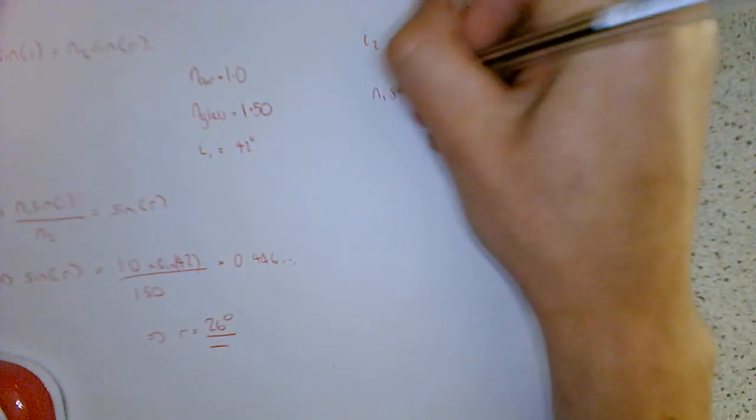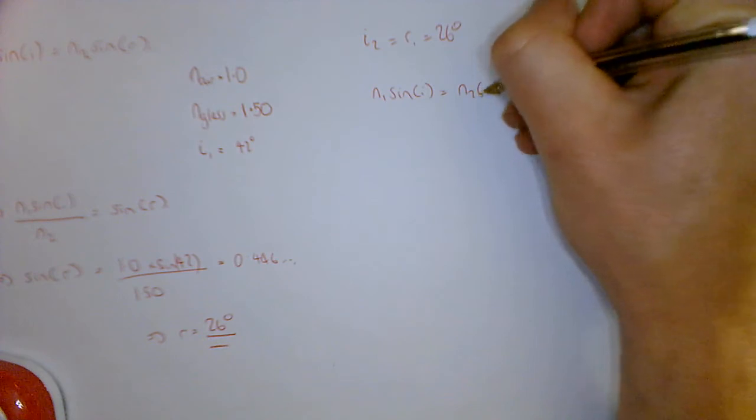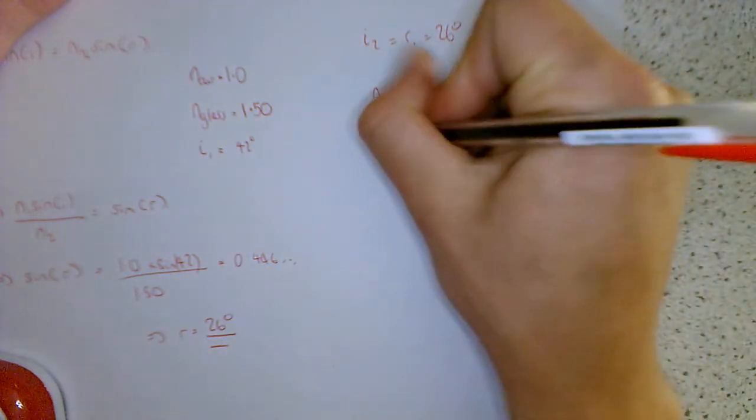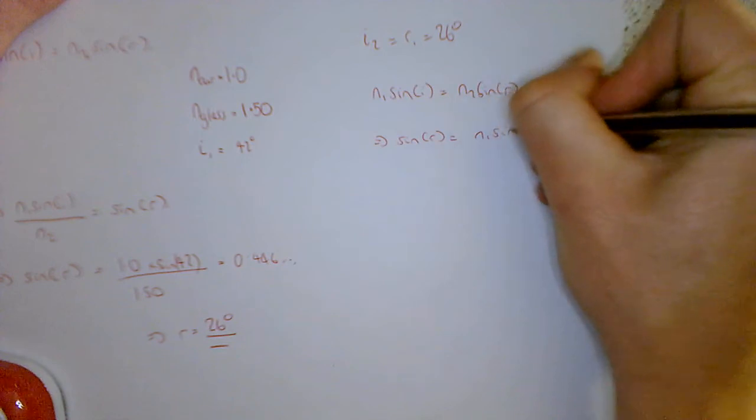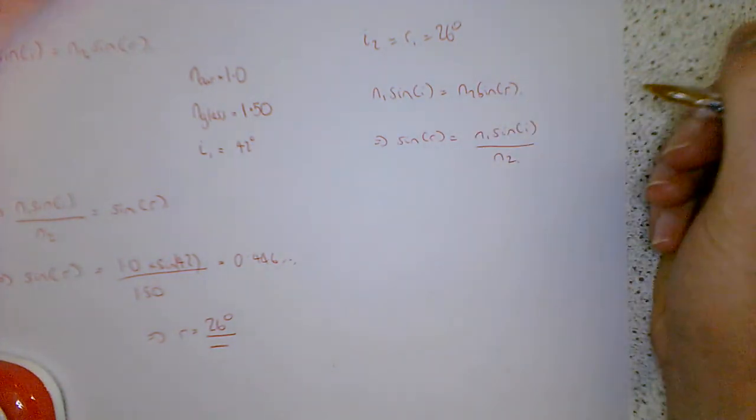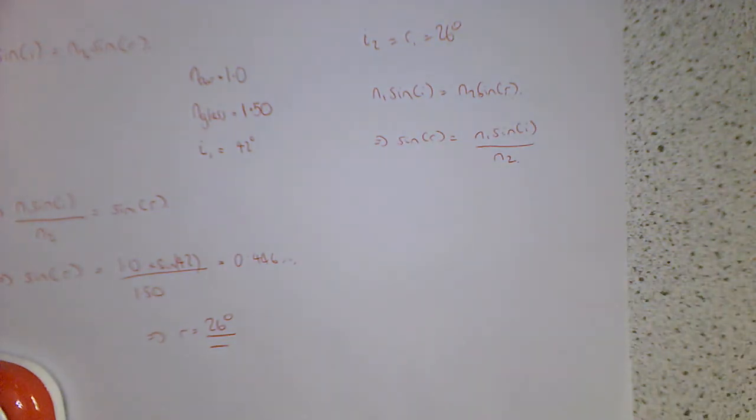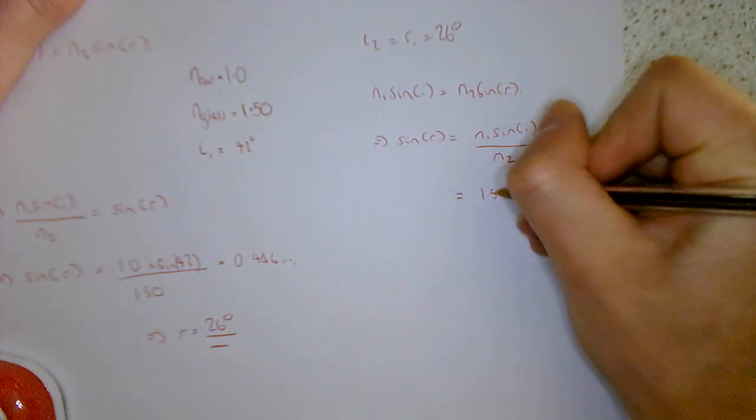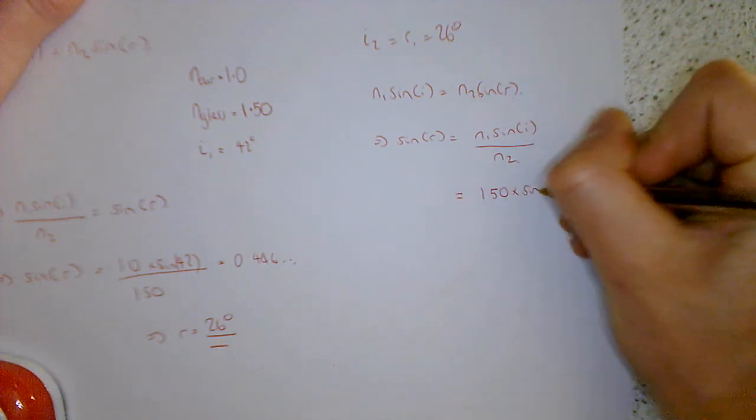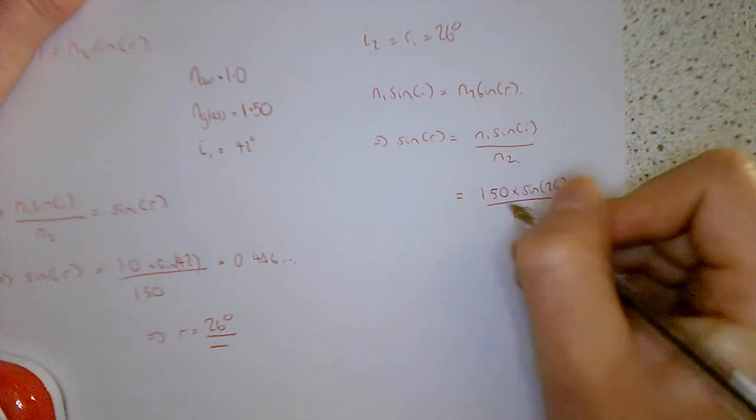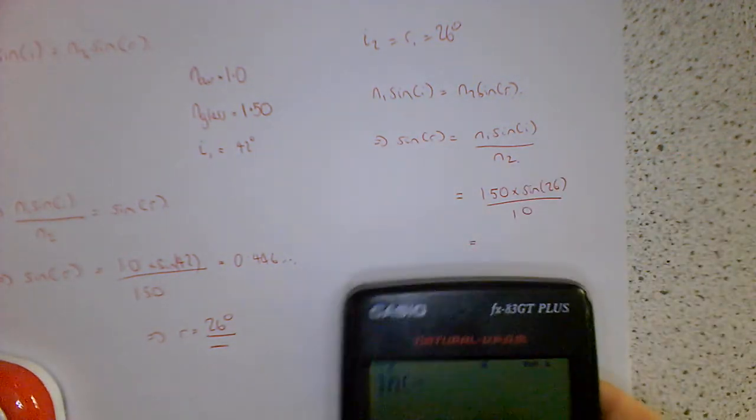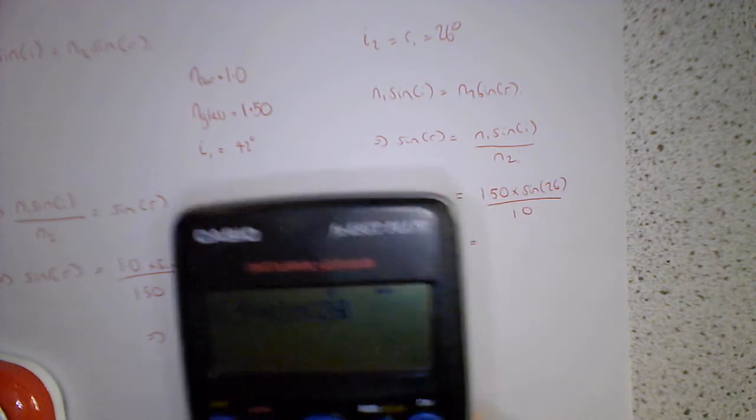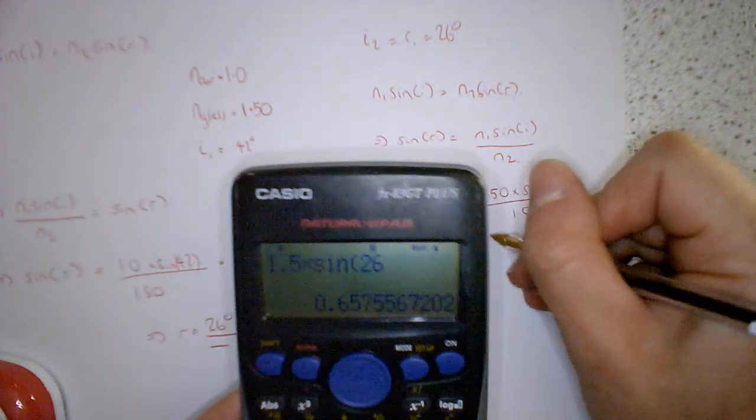So again, let's come back to our Snell's law. So this time, we want to calculate what R is again. But this time we're going to do it for the second boundary. So I'm going to do sin R is N1 sin I over N2. Now what's different here is that the second boundary is going from glass into air. So that means this time N1 is glass. Because it starts, the light starts in glass. We're going to times that by sin of 26. And now we're going to divide that by 1. So essentially we just do 1.5 times sin of 26. So we're going to do 1.5 times by sin of 26. And that's 0.657.